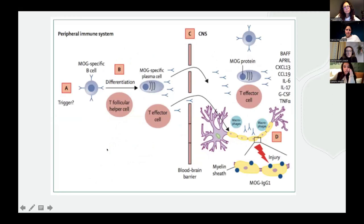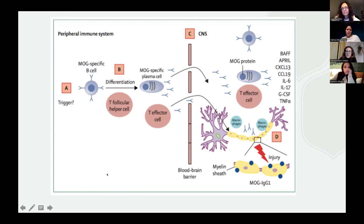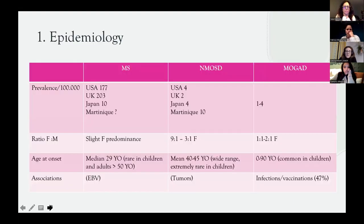With MOG, we also have an unknown trigger that activates B cells producing MOG-specific antibodies. With the help of T cells, these antibodies enter the nervous system through the blood-brain barrier. In this case, they damage myelin through activation of the immune system in the CNS and also through various cytokines. The process is very similar, although the target is different.